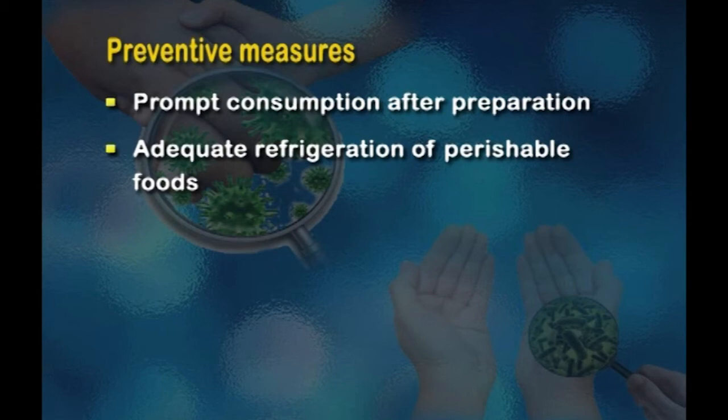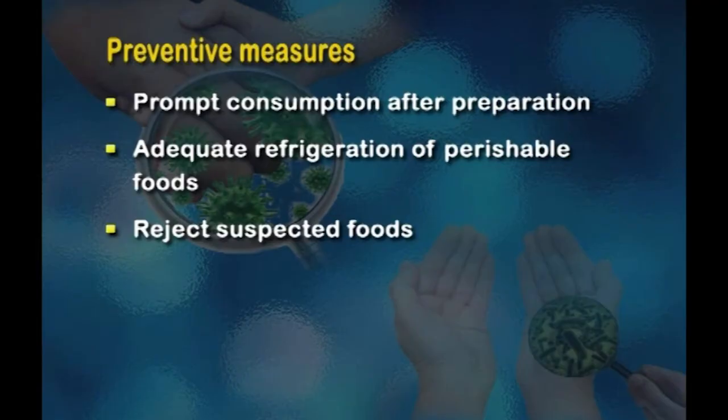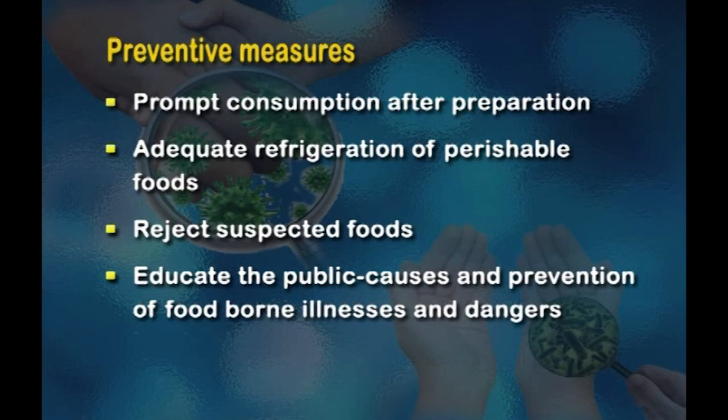Prompt consumption after preparation and adequate refrigeration of perishable foods are important. For example, if there is a power cut at an ice cream parlor, the ice cream may be subjected to microbial growth, so adequate refrigeration must be ensured. Suspected foods should be rejected without tasting, because even a small sample can lead to a food-borne illness. Finally, it is important to educate the public through TV, mass media, and newspapers about the causes and prevention of food-borne illnesses and the need to maintain hygiene while handling food and choosing restaurants.